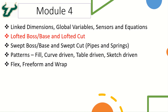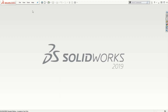Welcome to the second part of module number four, where we will be looking at how to create lofted boss/base and lofted cut using different possible methods. The lofted boss/base is a feature in SOLIDWORKS that can be created to add material that joins two different cross sections.